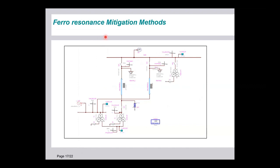Now, ferroresonance mitigation methods pertaining to this network. There are two portions. We identified that because all three transformers were in series, there was a huge amount of inductance with respect to the remote end substation. The remedy is to avoid having all three transformers in series — only the 220kV by 132kV and 132kV by 400kV transformers remain in series under this condition. This is one remedy. The second remedy is that the switching sequence is also slightly changed — the cable feeder is directly charged first, and then the source impedance is reduced. With these two conditions, when the substation is charged, it does not experience any over-voltages.